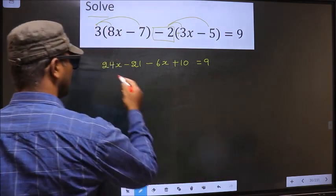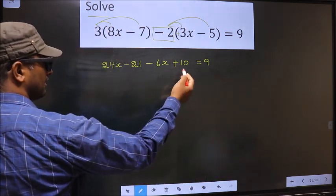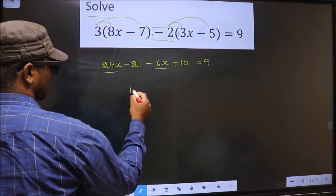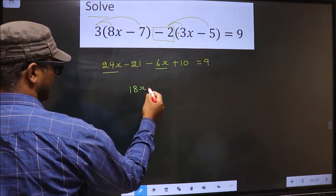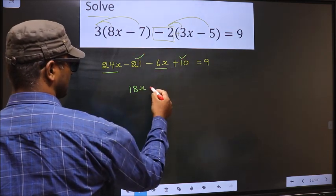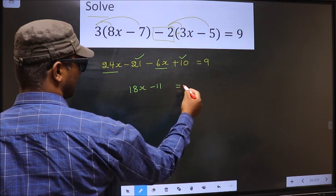Now let us simplify like terms. That is 24x minus 6x is 18x. Minus 21 plus 10 is minus 11 equal to 9.